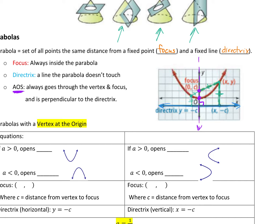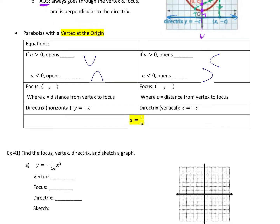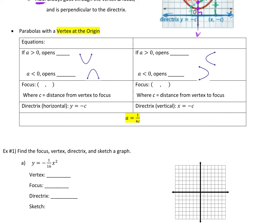Any questions on that stuff so far? The focus is the dot, the directrix is the line. So the first thing we're going to talk about are the easy ones where the vertex is at the origin, and then we'll get into some where your vertex moves.